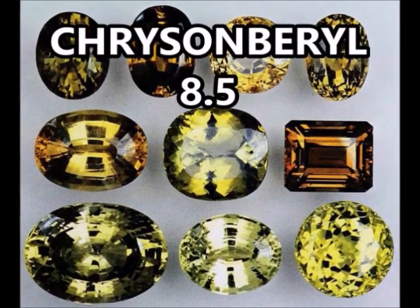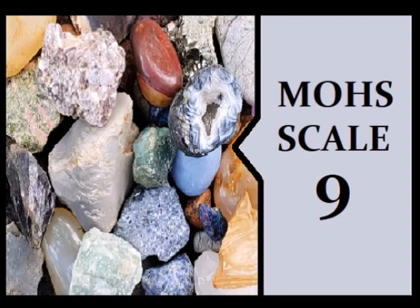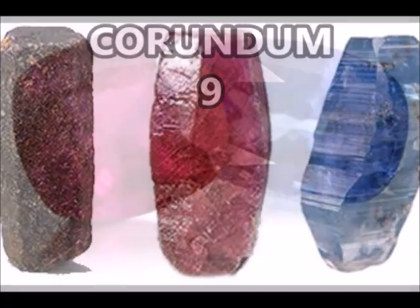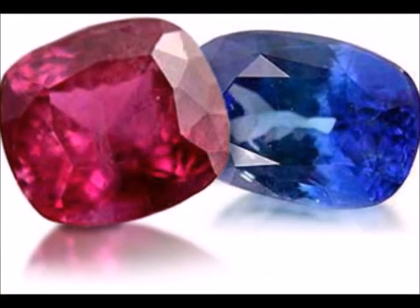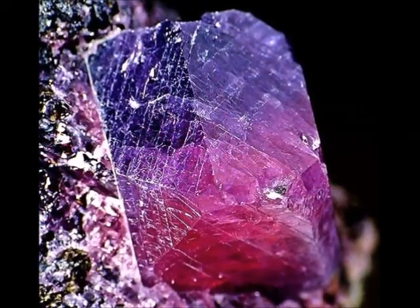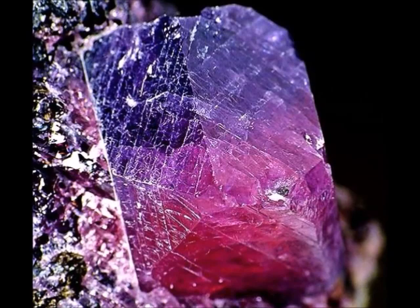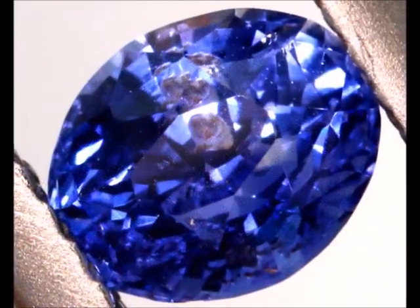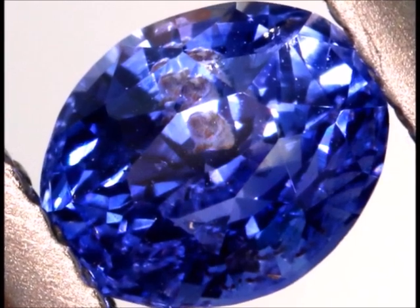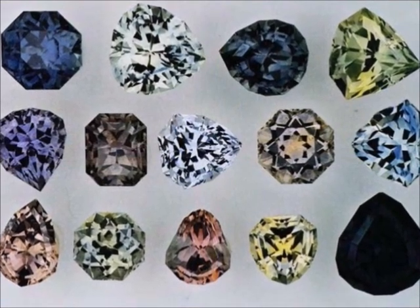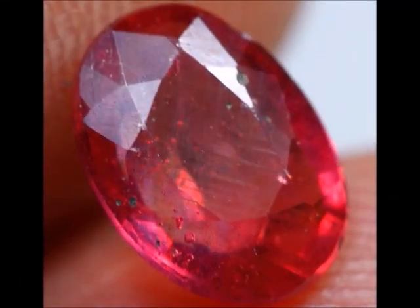Crystal Beryl, 8.5. Mohs scale 9. Corundum, 9. Corundum is best known for its gems Ruby and Sapphire. Did you know that Ruby and Sapphire are scientifically the same mineral but just different in color? Sapphire is best known for its gorgeous blue color but comes in a variety of colors except red. The red corundum is called Ruby.